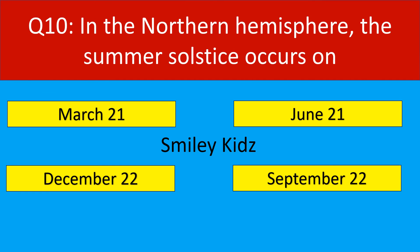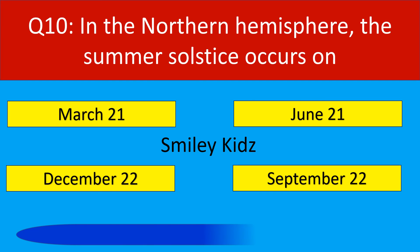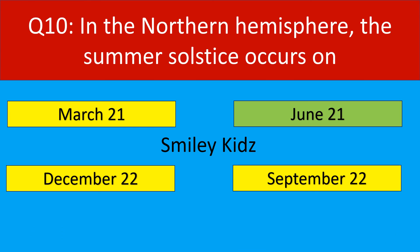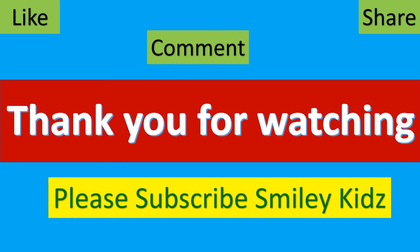Question number 10. In the northern hemisphere, the summer solstice occurs on. Your options are March 21st, June 21st, December 22nd, September 22nd. Your time starts now. Your time is up. The correct answer is June 21st. In the northern hemisphere, the summer solstice occurs on June 21st.